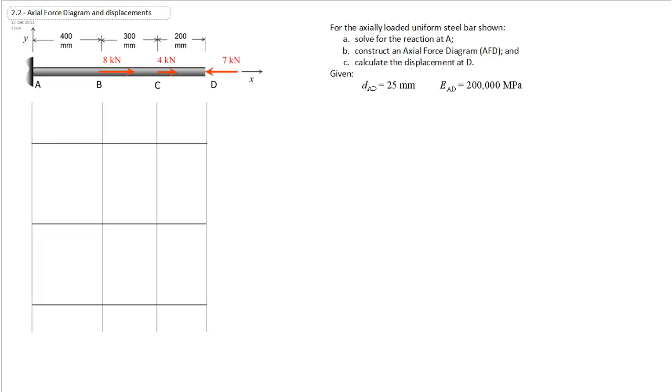Initially we're going to, of course, solve for the reaction at A, which will then allow us to construct an axial force diagram. We'll do that in a couple different fashions, and then go on to calculate the displacements along the bar, ultimately leading to the absolute displacement at D, from which we will construct an axial displacement diagram.